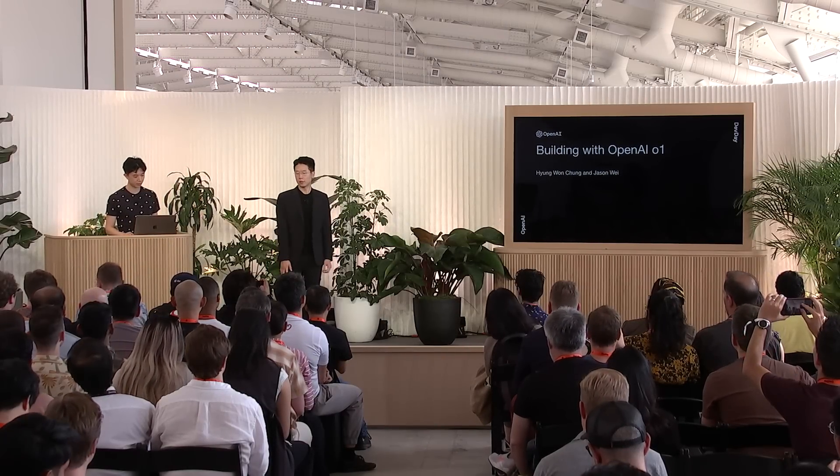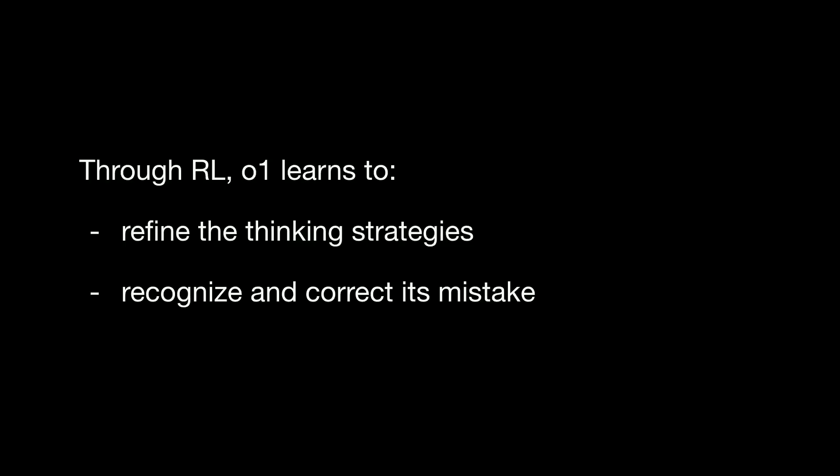Hello, my name is Young Won. Today with Jason, we're happy to share our thoughts on how you can build with O1. So O1 is a reasoning model, and we train O1 to think with reinforcement learning. During the training phase, it learns, among other things, to refine its thinking strategies and recognize and correct its mistakes.